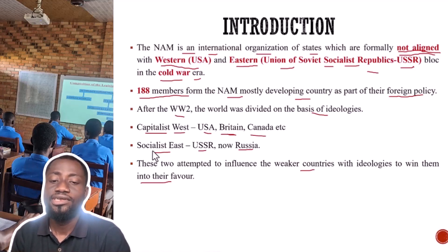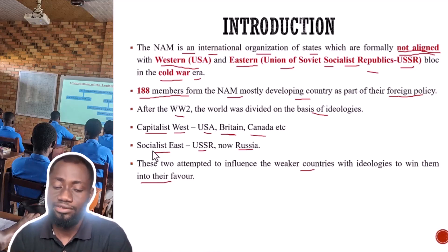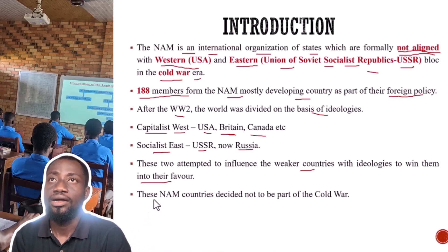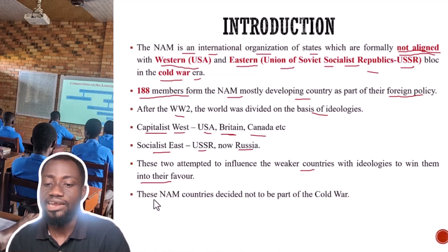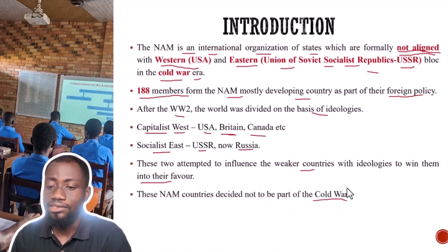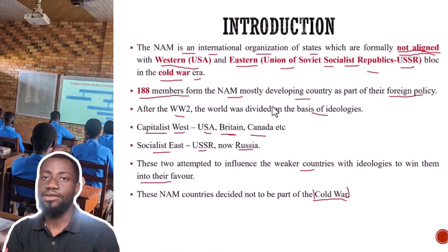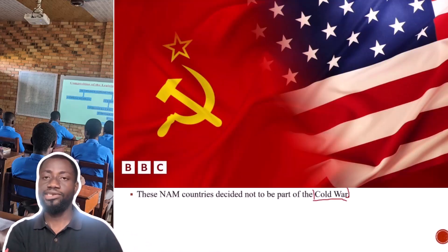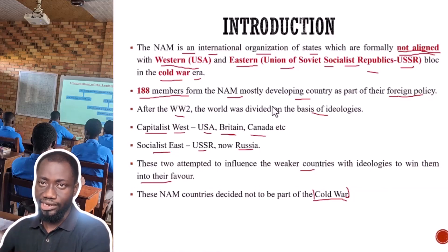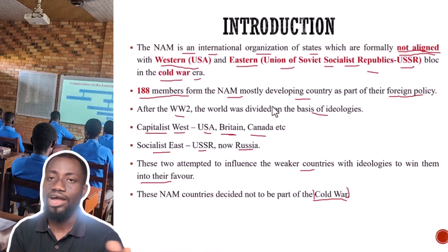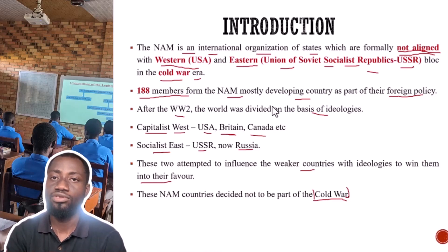These two ideologies — capitalism and socialism — were fighting for influence; this is what we call the Cold War. It did not actually happen as a physical shooting war, but as an ideological conflict. Some countries chose to align with the West and the East — Cuba, for instance, chose to align with the East. The problem is that when you choose to align with one bloc, you become antagonized by the other.